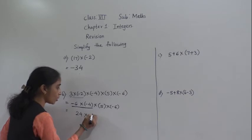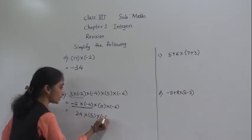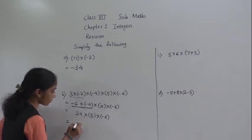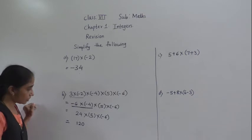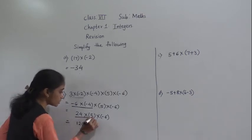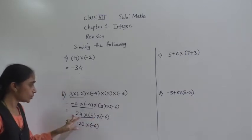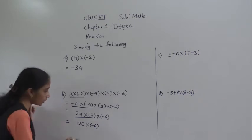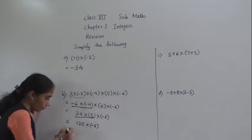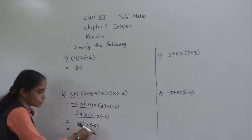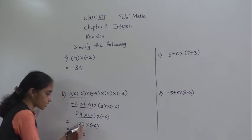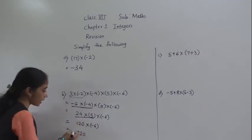Now which number we have to write? Multiplied by 5, multiplied by minus 6. 24 fives are 120. Multiplied by minus 6. Here 24 is also positive, 5 is also positive, so their product will be positive. Now 120 is positive, 6 is negative, so their product will be negative. 120 into 6: 6 zeros are 0, 6 twos are 12, carry 1, 6 ones are 6 and 1 is 7. So the answer is minus 720.